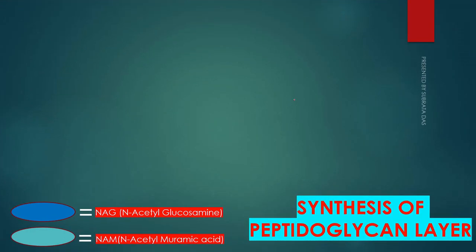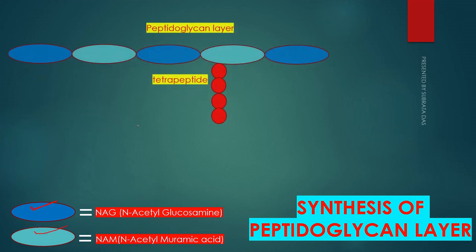Now we will see how the peptidoglycan layer is synthesized. This is the N-acetyl glucosamine (NAG) and this is the N-acetyl muramic acid (NAM).